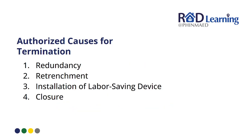Authorized causes for termination: first is redundancy, meaning employees are in excess of what human resource planning requires — for example, if there are two people in a position but only one is needed in the plan. Second is retrenchment, which is eliminating excess labor to save costs — a perfect example is if one department is no longer needed; it is an authorized cause for termination to save costs for the business. Third is installation of a labor-saving device, meaning the role becomes automated.